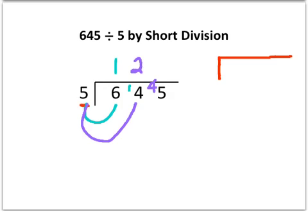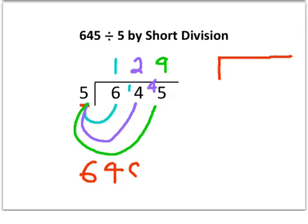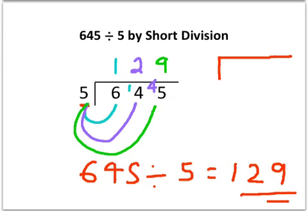And then it's just a case of saying how many fives go into 45. And that goes nine times, because nine fives are 45. And then we've basically got the answer to our sum. So we can say 645 divided by 5 is 129. That's the method of short division.